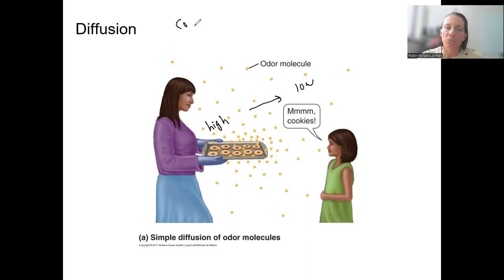Concentration gradient is one mechanism for diffusion. The example here is a batch of cookies, and those odor molecules diffuse throughout space. If you're close enough, you could smell them. Eventually, over time and distance, that smell would dissipate.